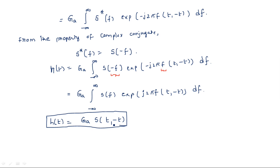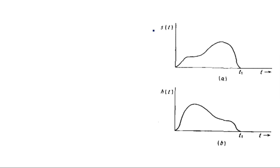Now what is the relation between S(T) and S(T₁ - T)? Consider a signal S(T) with a certain shape extended up to T₁. We have the impulse response H(T) = G_A · S(T₁ - T). Let us see whether S(T₁ - T) is a folded version or some other transformation of S(T).